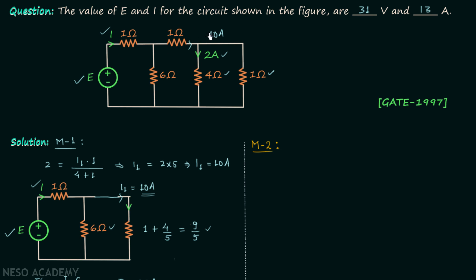In method number 2 we will use nodal analysis. The first step is to find the number of principal nodes — in this case there are 3. All equipotential points act as a single node. In step 2 we assign node voltages and choose the reference node. We choose the bottom node as the reference, connecting it to ground so it has zero potential.